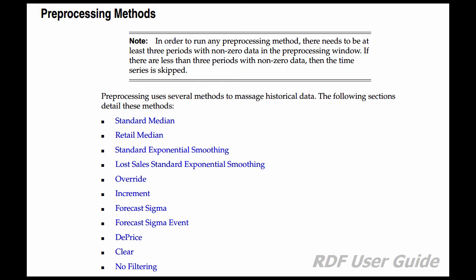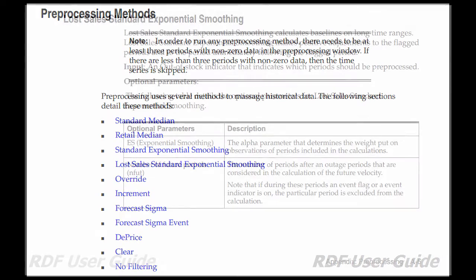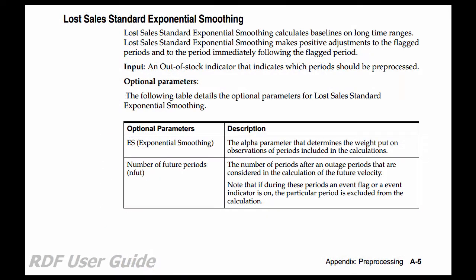Some commonly used methods include lost sales standard exponential smoothing. By clicking on the link you are taken immediately to this topic. Lost sales standard exponential smoothing will correct the periods that are indicated by you as being out of stock. It is generally used to process long time ranges.